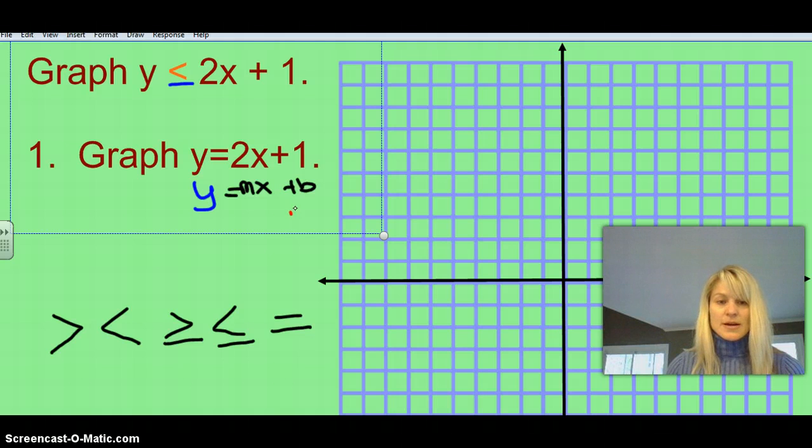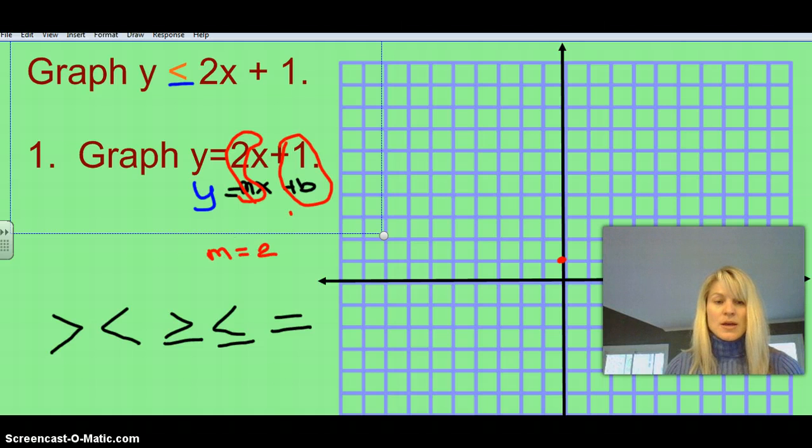And so we know that b is our starting point here, so we know that the b is at the 1 on the y, so we're going to go over to the 1 on the y and put a point. And then we know that m is the slope, and so that is m equals 2, and remember that's the same thing as 2 over 1. And so these are both positives, so I'm going to go up 2 in the positive direction, and right 1 in the positive direction.